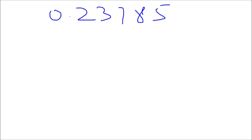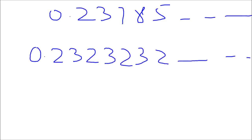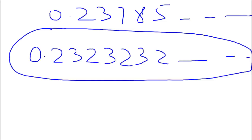For example, 0.23785 is non-terminating and non-repetitive. Now suppose the number was 0.2323232 — this is non-ending, but it is repetitive because the digits 23 are repeating. So should these be rational or irrational numbers? They cannot be irrational because irrational numbers are non-terminating and non-repetitive. These are non-terminating yes, but they are repetitive, so these cannot be irrational numbers.